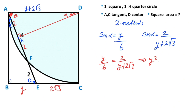Therefore, if we equalize these two expressions: y over 6 must equal 2 over y plus 2 root 3. After cross multiplication: y squared plus 2y root 3 equals 12. If you notice, this equation is the same as the equation in the first method, so y equals root 15 minus root 3.